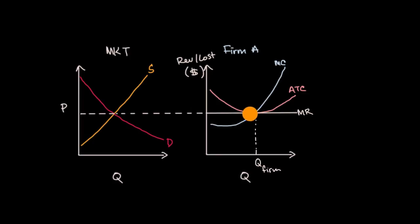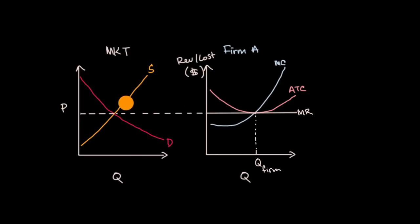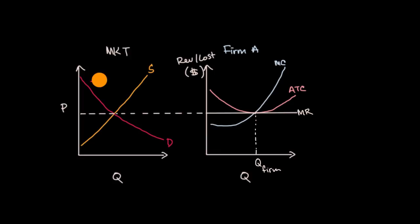Either of those situations would get us back to an equilibrium state like this. But now let's imagine a shock to the market. Let's say a new research study comes out saying that the apples this market produces are incredibly good for you — they'll make you live longer, happier, and help you have more friends. Well then the demand for apples goes up, and so you have a new demand curve that looks something like this: D prime.